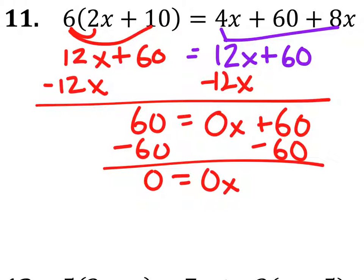So this goes back to the question. What value, the x, times 0 will give us 0? Anything will. So as it turns out, x equals all real numbers. So how many solutions are there? Infinite solutions.